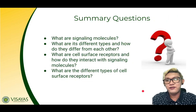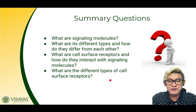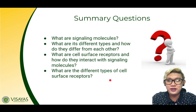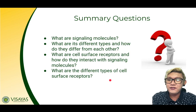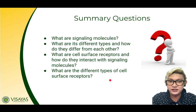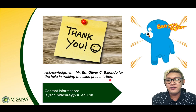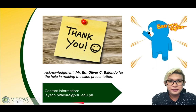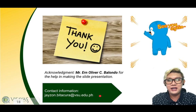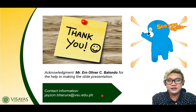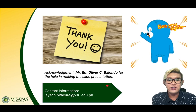That ends our lesson. Answering the summary questions will be a great help during your review. What are signaling molecules? What are the different types and how do they differ from each other? What are cell surface receptors and how do they interact with signaling molecules? What are the different types of cell surface receptors? I hope you will be able to answer these as you review this lesson. If you have any questions, you can contact me through my email or your respective lecturer. You can also post your questions in the Facebook Messenger group chat. Thank you very much and see you again in our next lesson.